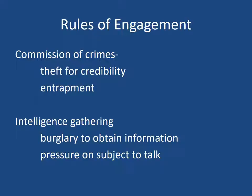As the informant works, there may be a time when — to add credibility to the informant — you look for permission for the informant to commit a crime. One of the concerns about that is that when you're giving permission for this person to commit a crime, how many are they going to commit? You know, one for me, one for you type of thing. You're going to give permission to steal one piece of equipment, they steal three, and they don't tell you about the other two.